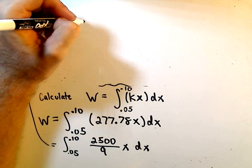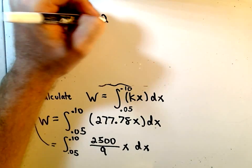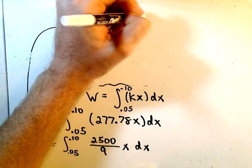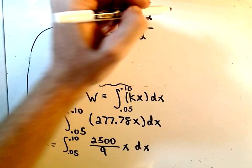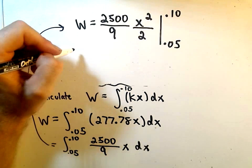So when we integrate this, we're simply going to get that the work is equal to 2500 over 9. When we integrate x, we'll just get x squared over 2. And we have to plug in the values 0.05 and 0.10.